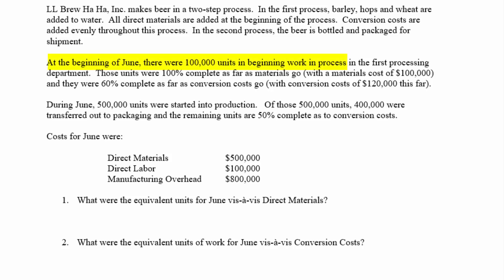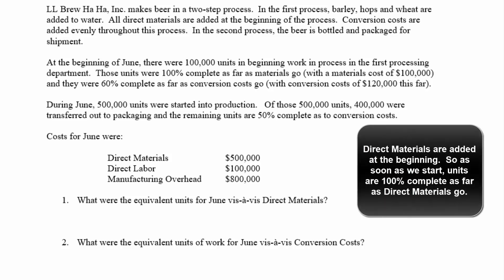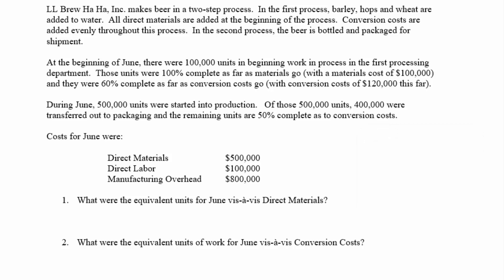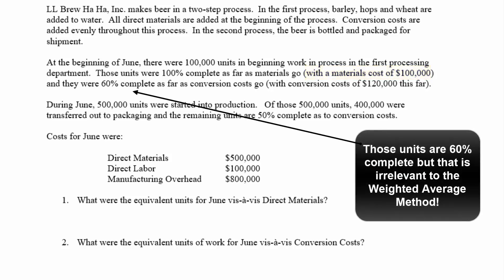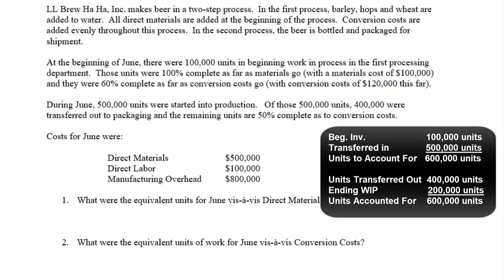At the beginning of June there were 100,000 units in beginning work in process. Those units were 100% complete as far as materials go, because materials are added at the beginning of the process, and those units are carrying $100,000 cost for materials. Those 100,000 units were 60% complete as far as conversion costs go and have accumulated $120,000 of costs thus far. During June they give us another 500,000 units, we transfer out 400,000 units, and the units left — 200,000 units — are 50% complete as to conversion costs.